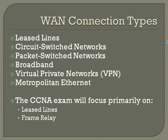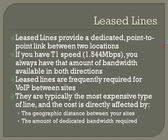The whole next chapter is going to be exclusively frame relay and configuration. Leased lines provide a dedicated point-to-point link between two locations. If you have a full T1 speed of 1.544 megabits per second, you always have that amount of bandwidth available in both directions, even if you're not using it. It's always there, always available — that's why it's dedicated. Leased lines are frequently required for voice between sites.